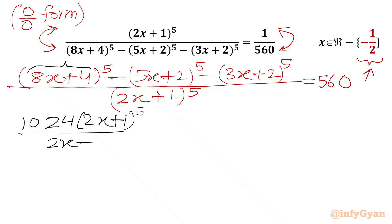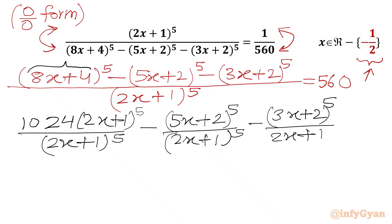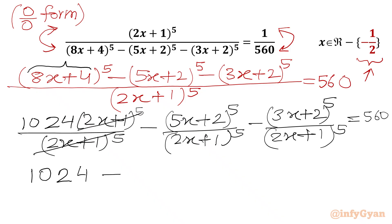In the denominator we have (2x+1)^5. So the expression becomes 1024 times (2x+1)^5 minus (5x+2)^5 over (2x+1)^5 minus (3x+2)^5 over (2x+1)^5, equal to 560. Now we will cancel the (2x+1)^5 terms.